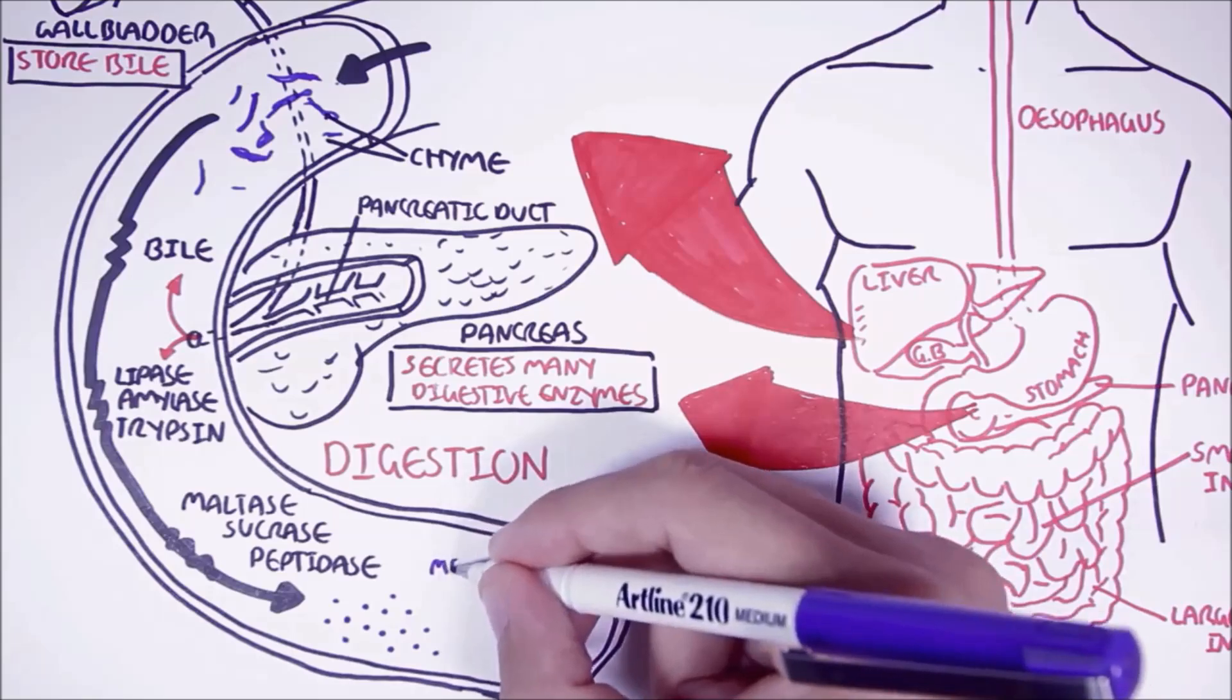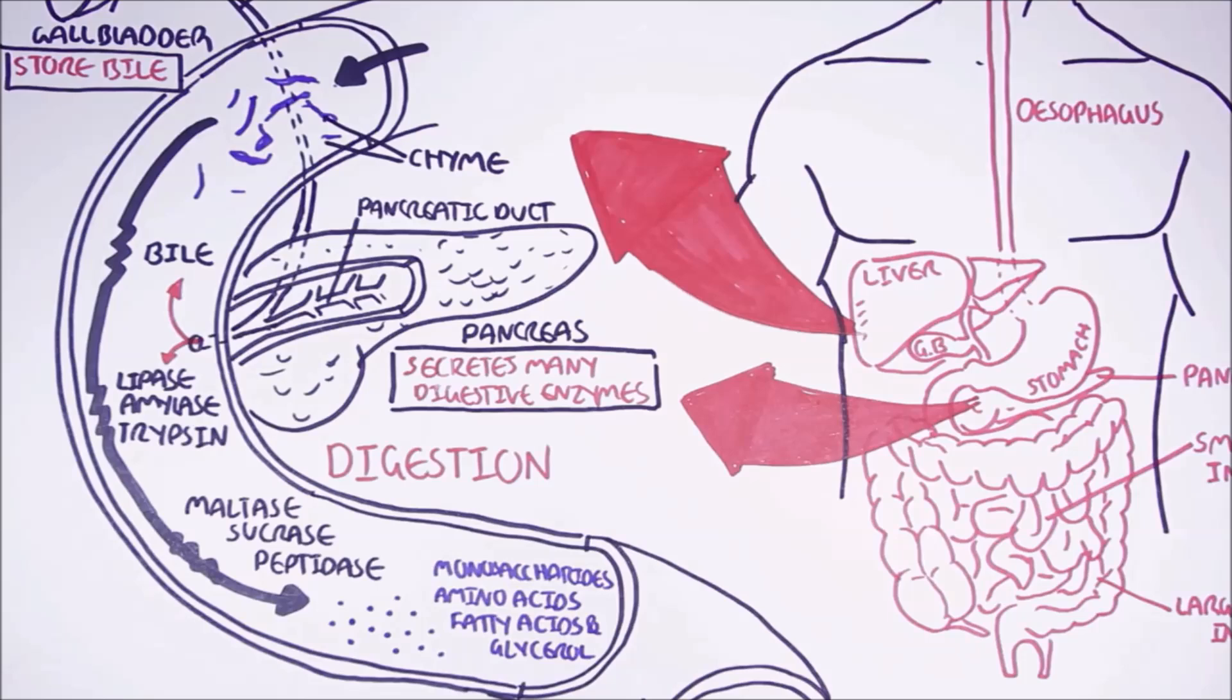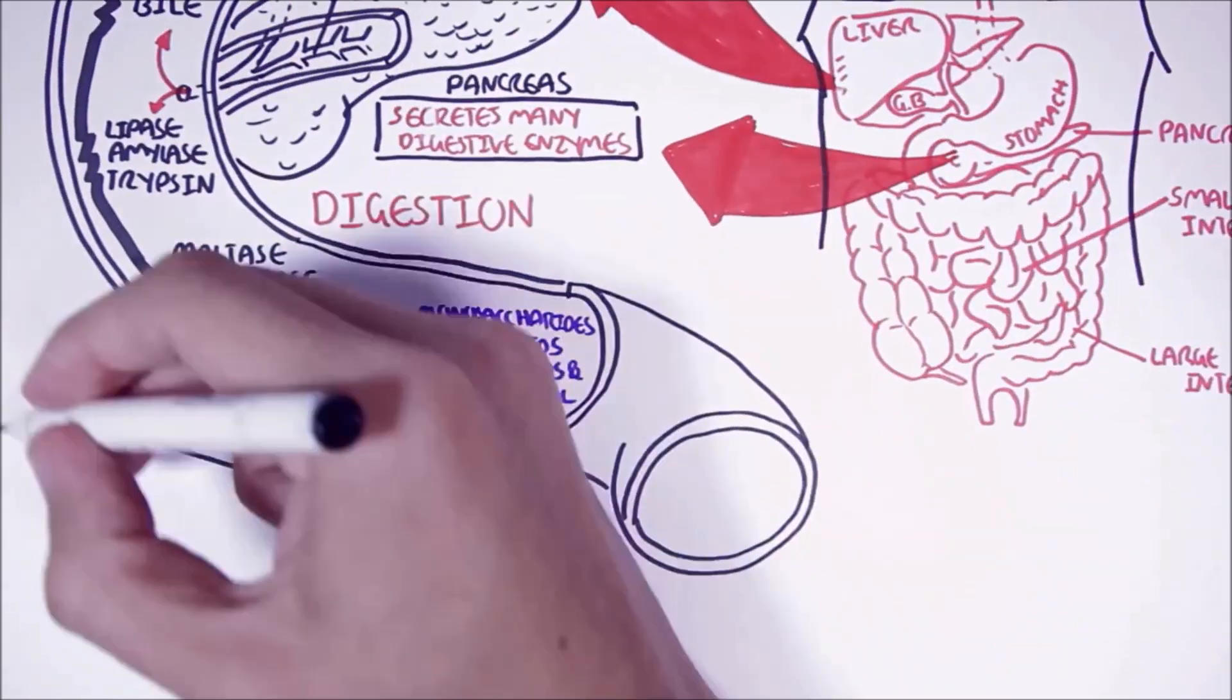These smaller molecules are the monosaccharides, amino acids, fatty acids, and glycerol which are the building blocks of carbohydrates, proteins, and fats. And it is only in this form that the body can absorb them.